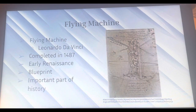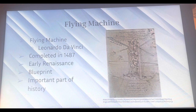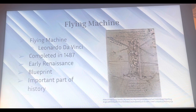Another one of his artworks is called The Flying Machine, completed in 1487, which is an example of early Renaissance artwork. This specific artwork was more of a blueprint than an actual artwork. It was a really important part of history because it contributed to the concept of planes and the idea of a flying vehicle in the future.